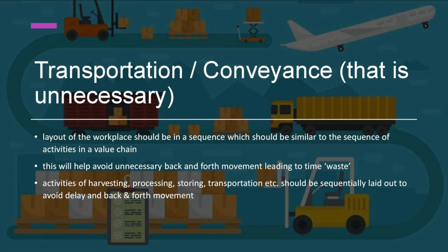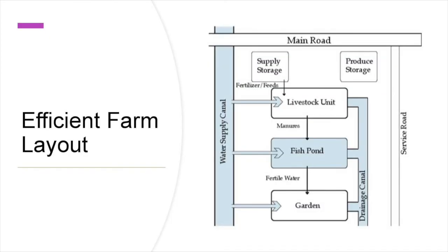The third waste is transportation and conveyance. The layout of the workplace should be in a sequence similar to the sequence of activities in a value chain. This will help avoid unnecessary back and forth movement, leading to time waste. Activities of harvesting, processing, storing, and transportation should be sequentially laid out. Here you can see an example of an efficient farm layout, where the main road is adjacent to the supply storage so that produce can be directly loaded and unloaded from vehicles parked on the main road.